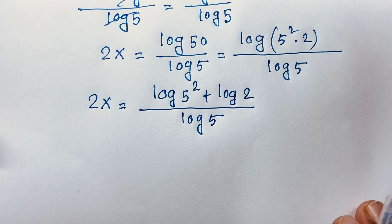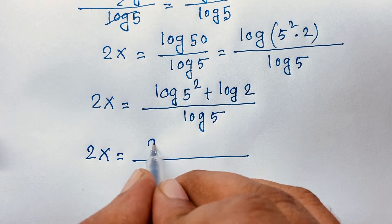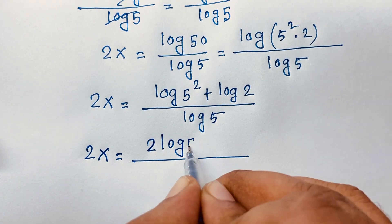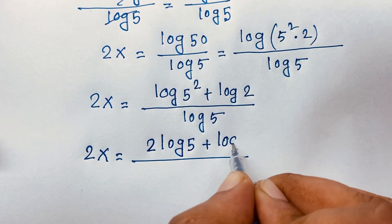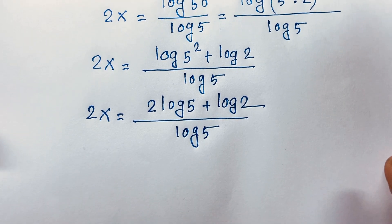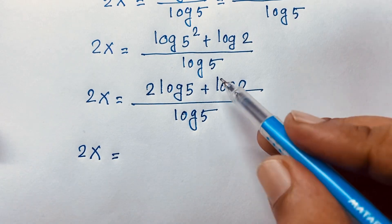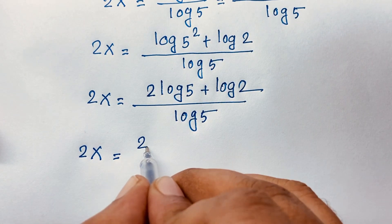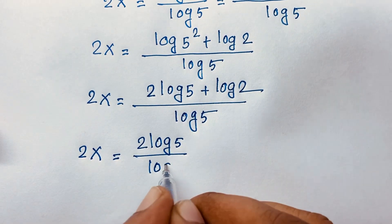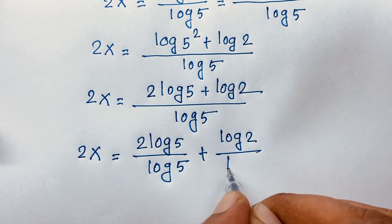Now you can see easily: I move the exponent 2 in front, so the expression becomes 2·log 5 plus log 2, all over log 5. If I separate this fraction I can see it will be 2·log 5 over log 5 plus log 2 over log 5.